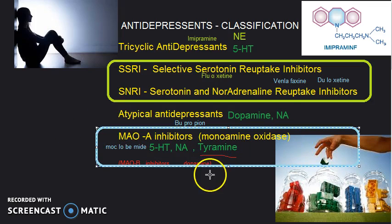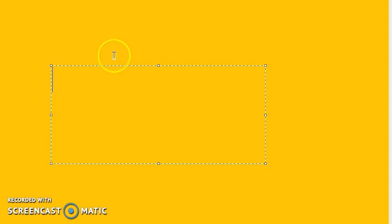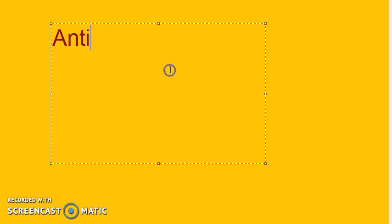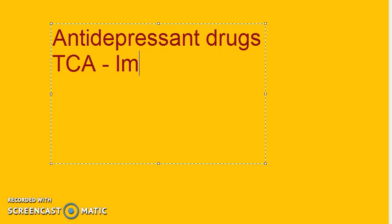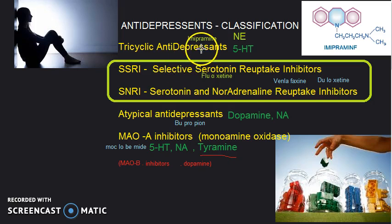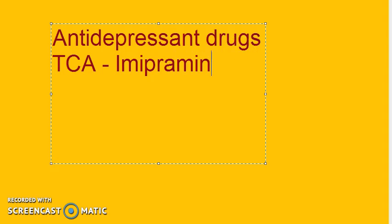Time to revise. In this video we learned antidepressant drug classification. Tricyclic antidepressants are named for their triple-ring structure; example — imipramine. Their action is to increase norepinephrine and serotonin levels, but they have a lot of side effects so they are not the first choice.